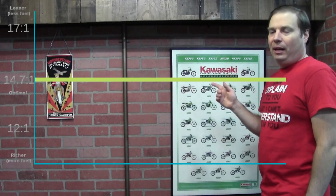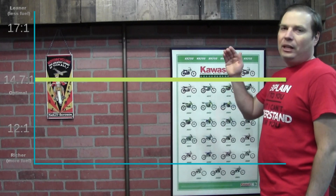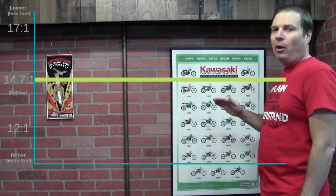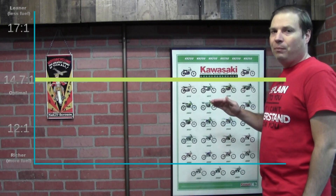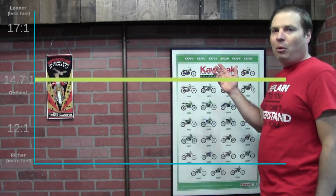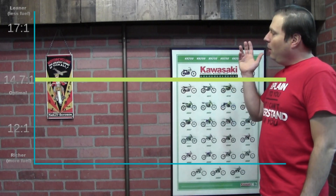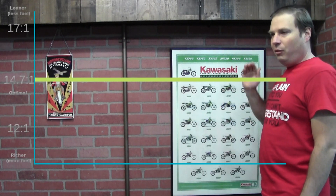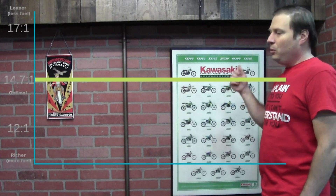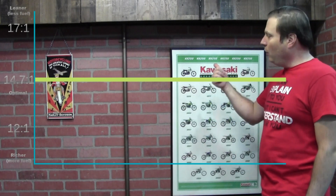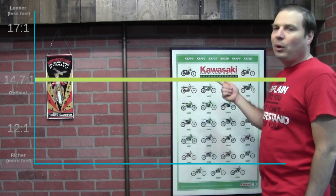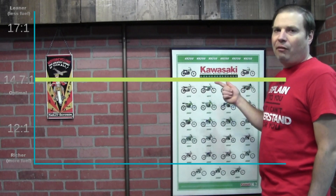What does that mean? That means 14.7 parts of air to one part of fuel. In ideal conditions, this would be the optimal ratio of air to fuel to get a complete burn, which would get you the most efficiency — not only fuel mileage, but also power. But in the real world, there's a lot of variables.